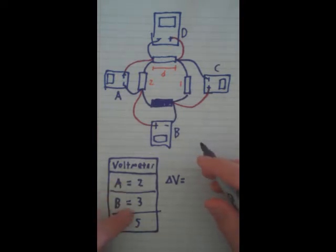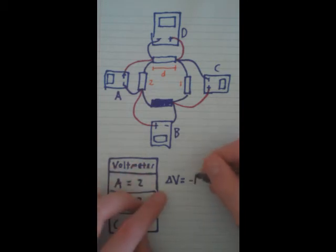So, we just add all these up, 2, 3, and 5. Since it has to equal zero in a loop, then our delta V will be negative 10 volts.